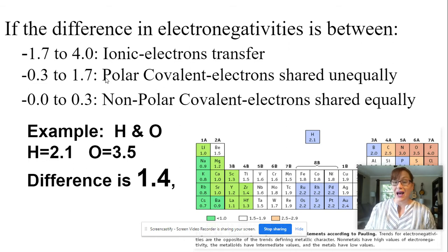If the difference is really high, and this really only happens with metals and nonmetals, then the electrons will completely get pulled off of the metal and onto the nonmetal. The nonmetals are always much stronger in their electronegativity.